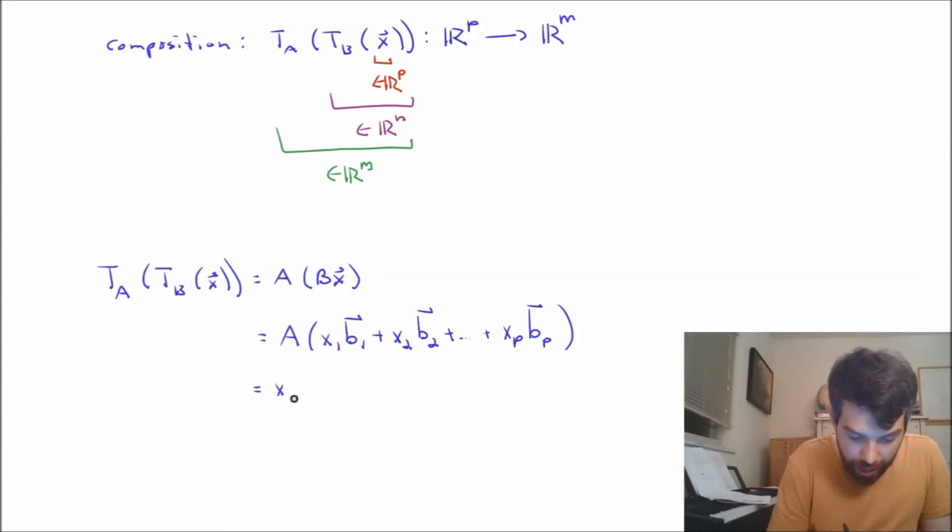And what I'm going to get is the following: x_1 A B_1, plus all the way down to x_p A B_p. And what I've done here is I've used my algebraic rules that I know about how a matrix vector product distributes over these linear combinations.